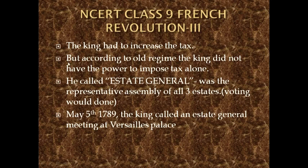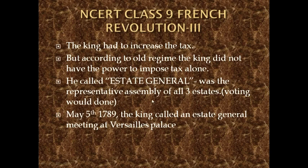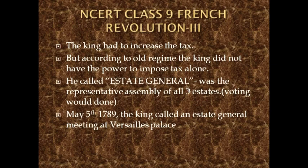However, there was a tradition — according to the Old Regime, the king did not have the power to impose tax alone. The Old Regime refers to an age-old tradition. So the king had to call all three Estates General. The Estates General was the representative assembly of all three states: the clergy, the nobility, and the commoners or middle class people. According to the Old Regime, the king could not introduce a new tax without meeting with all three states.